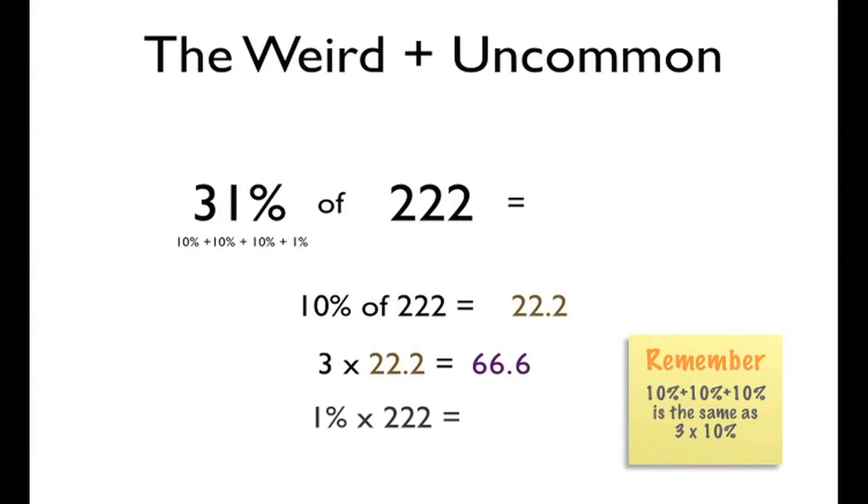Last, we need to find 1% of 222, which just gives us 2.22. We broke it up, so we put it back together. 66.6 plus 2.22 gives us our final answer of 86.82.